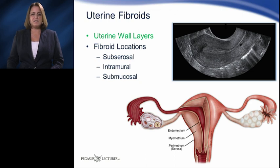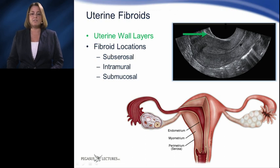Before discussing where you may encounter these benign tumors, let's first review the layers of the uterine tissues. The outermost layer of the uterus is called the serosa or parametrium.